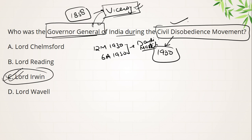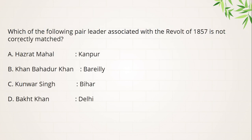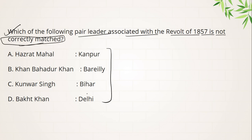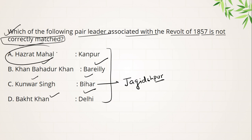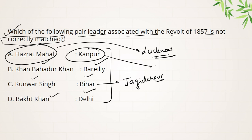Last question — which of the following pair of leaders associated with the revolt of 1857 is not correctly matched? General Bakht Khan was in Delhi, Kunwar Singh was in Bihar — precisely in Jagdishpur. Khan Bahadur Khan was in Bareilly. Begum Hazrat Mahal was in Lucknow — she led the revolt in Lucknow — while Nana Sahib led the revolt in Kanpur, and his commander at that time was Tantia Tope.